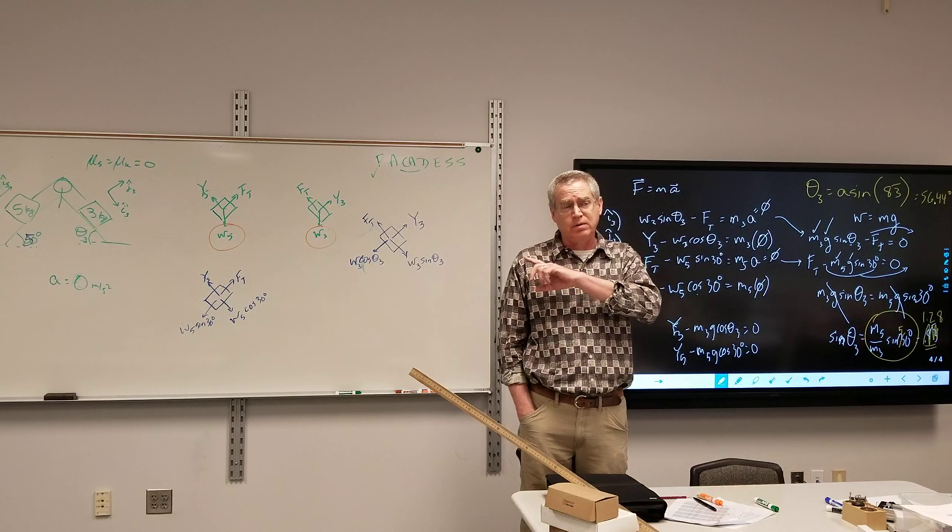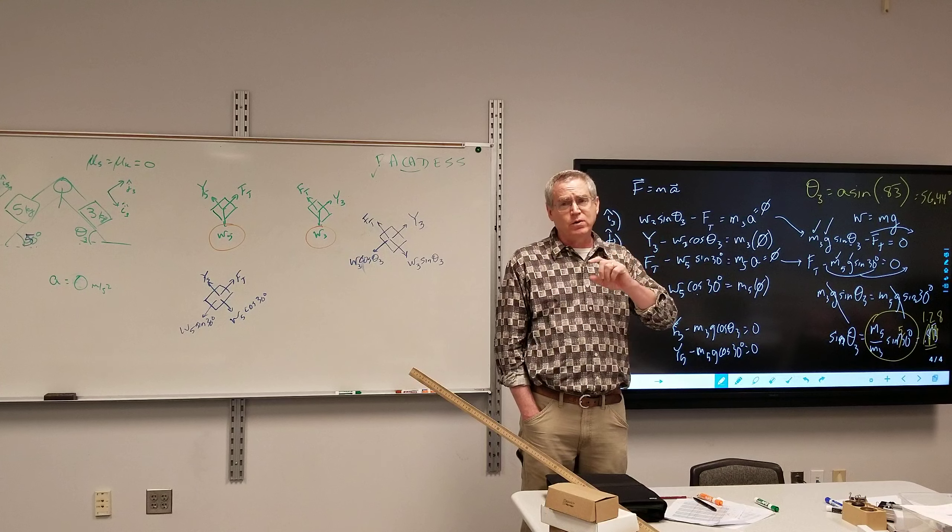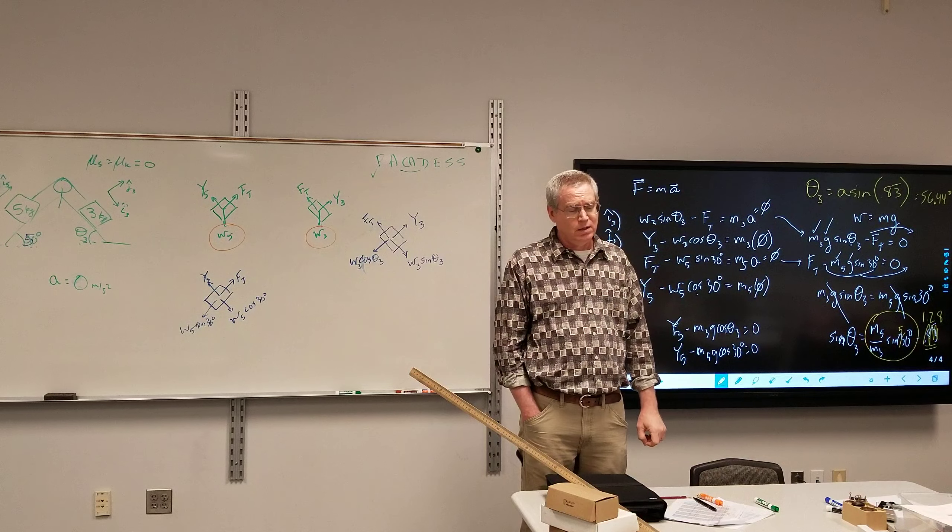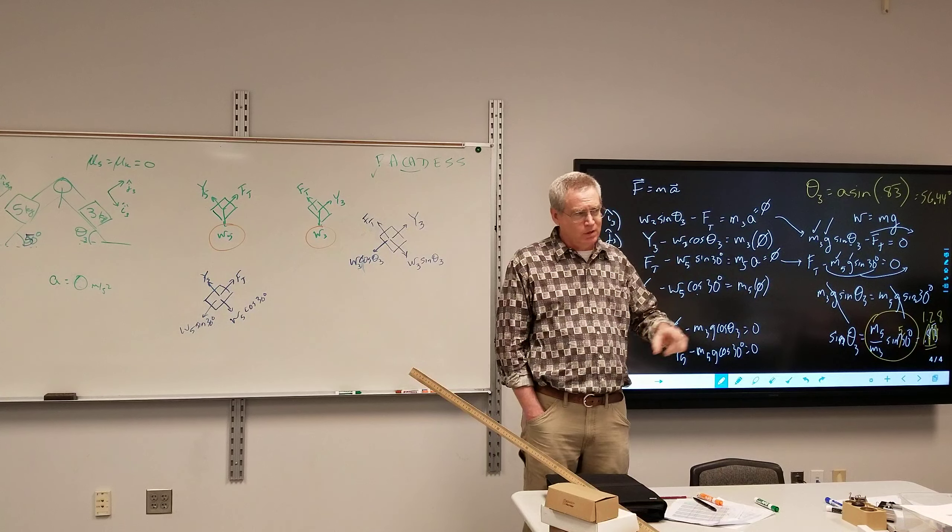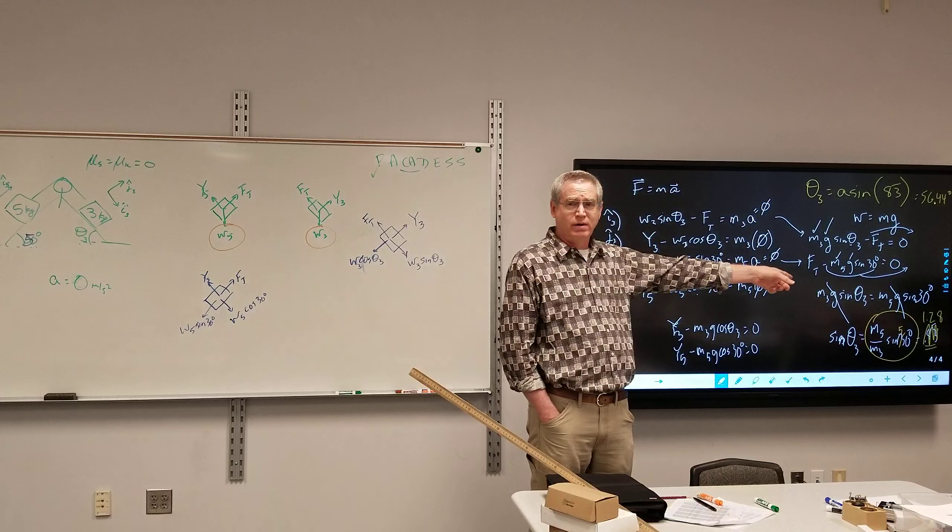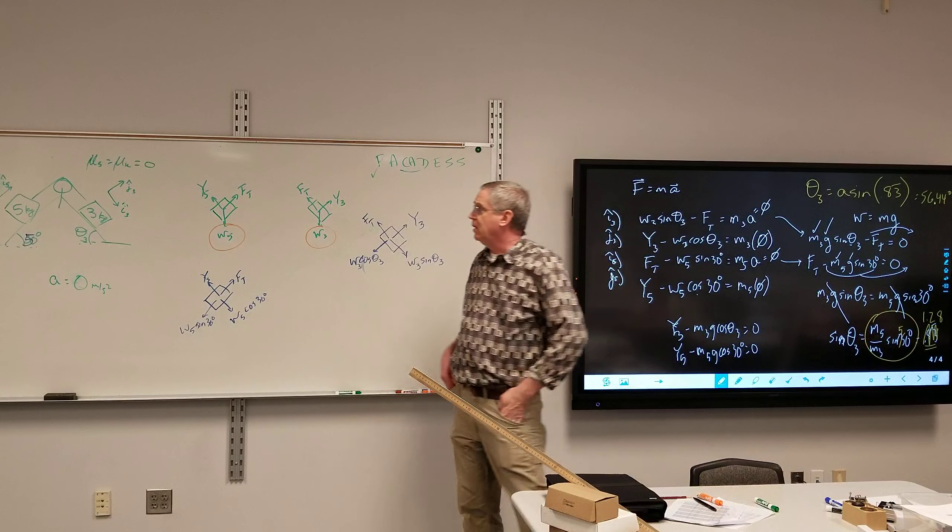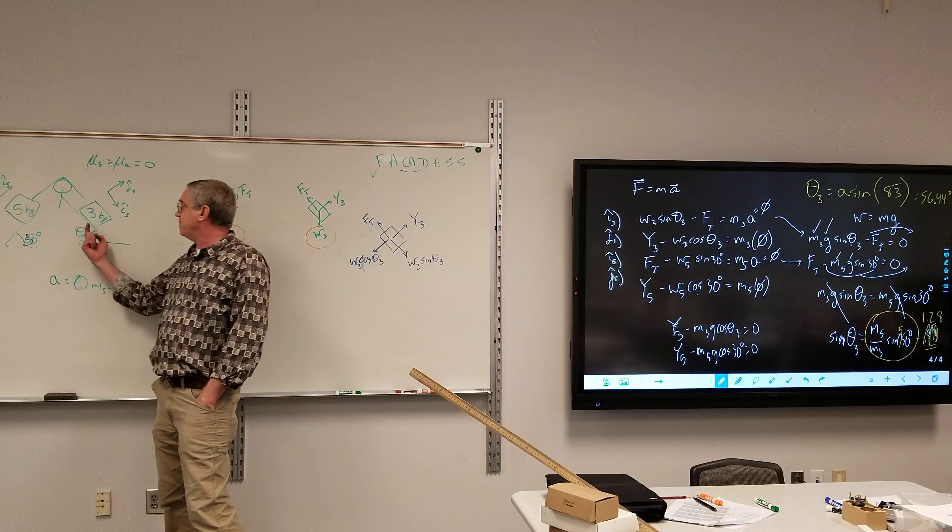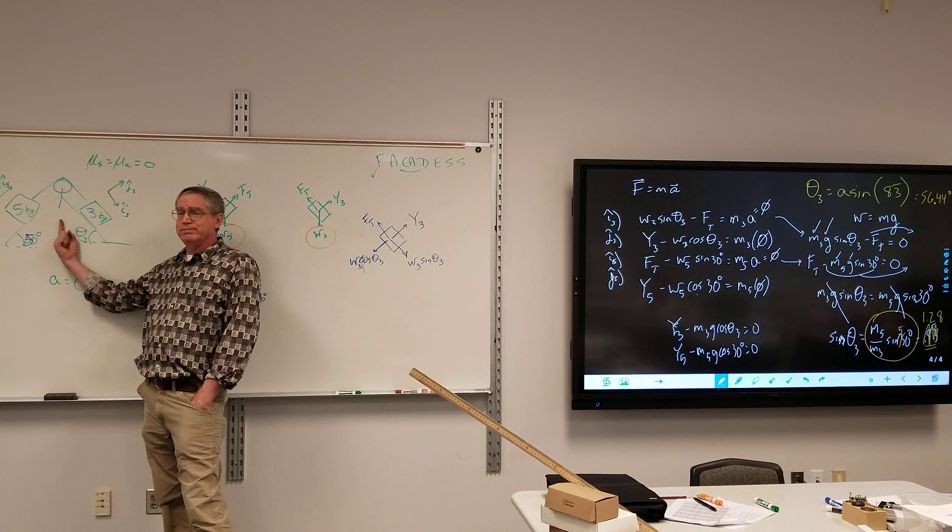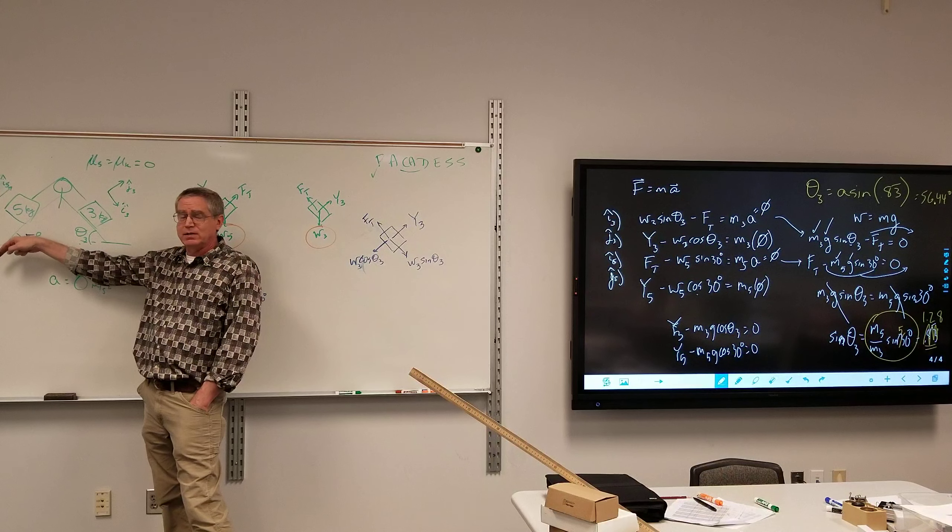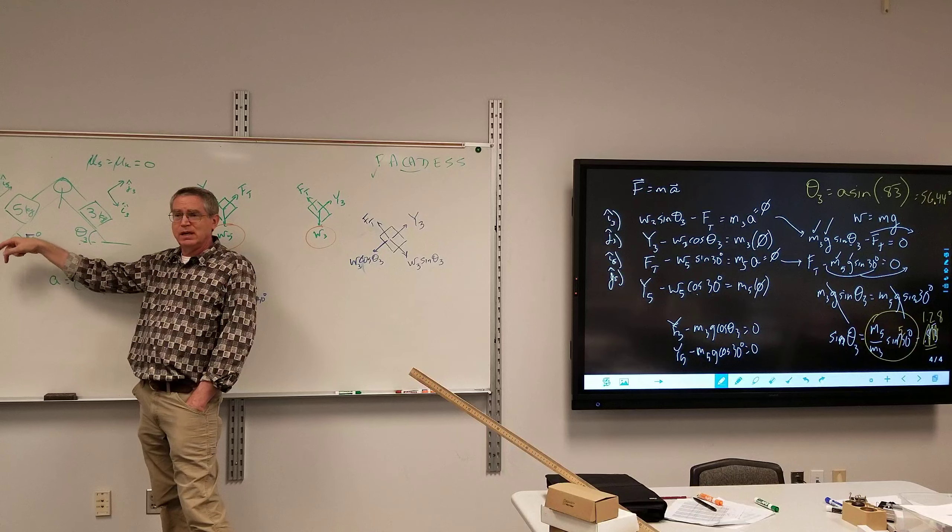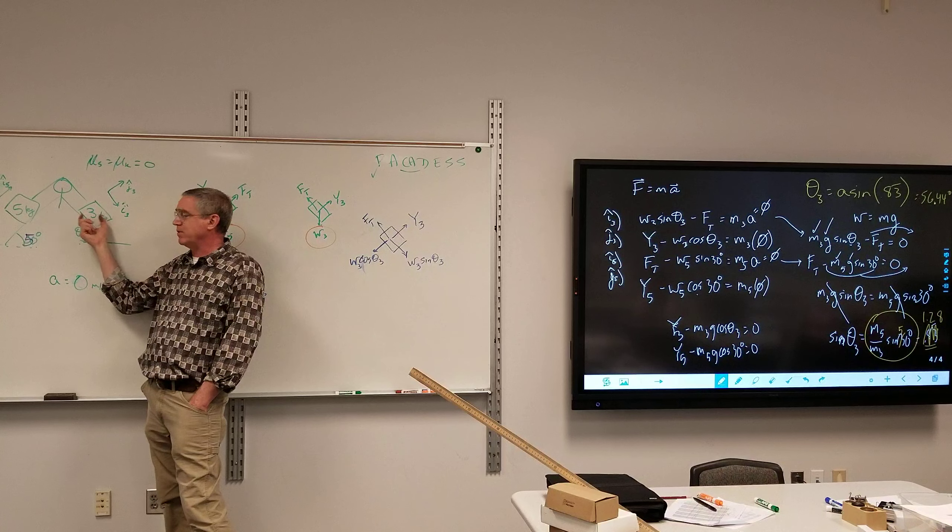In this particular case, it cannot happen. What is the largest value sine can be? 1. So we have a sine that's equal to 1.28. Right there, I would expect you to get an error. What that means is that if theta 3 were 90 degrees, that 5 kilogram mass is still going to be sliding down the ramp. It would not be, there's not enough in order to balance it out.